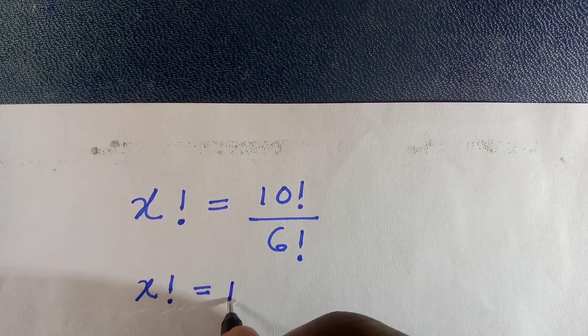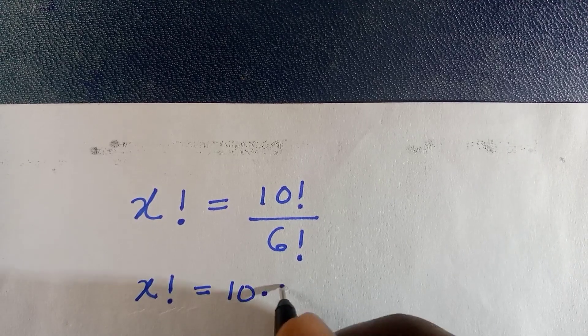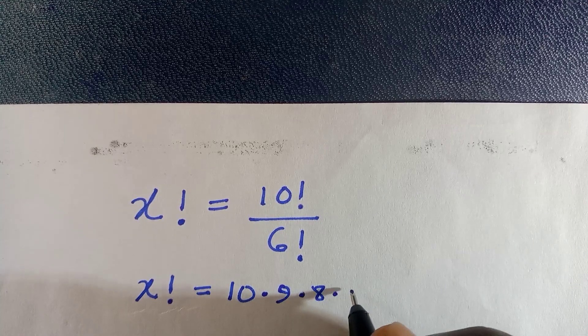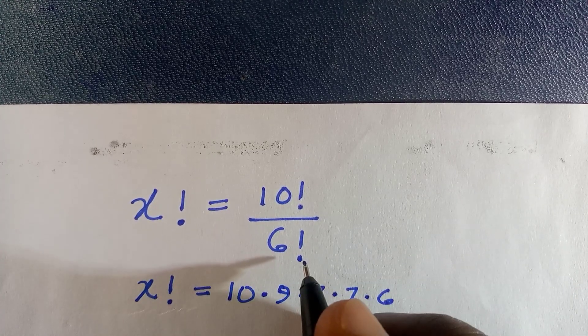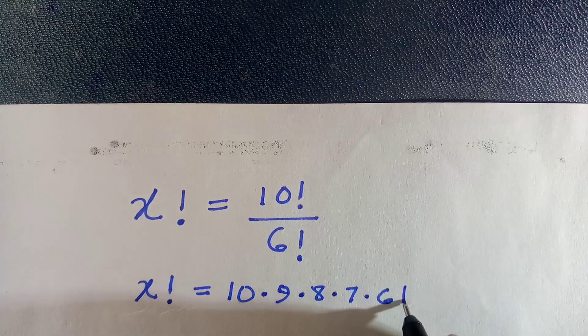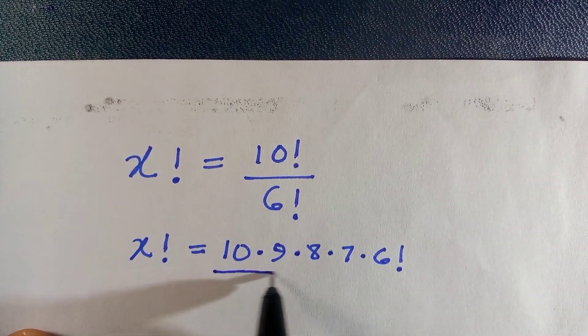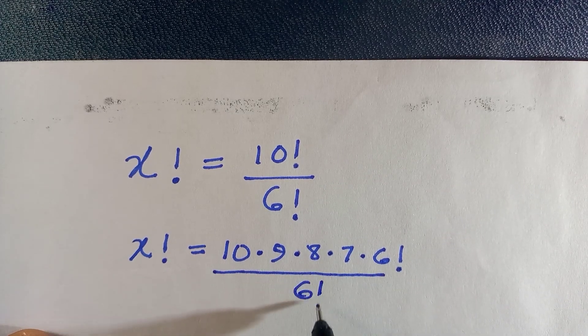We know that if we have 10 factorial, it can be 10 times 9 times 8 times 7 times 6 factorial. I'm going to stop at 6 factorial because we have it in the denominator, and we can cancel it. Here it's all divided by 6 factorial.